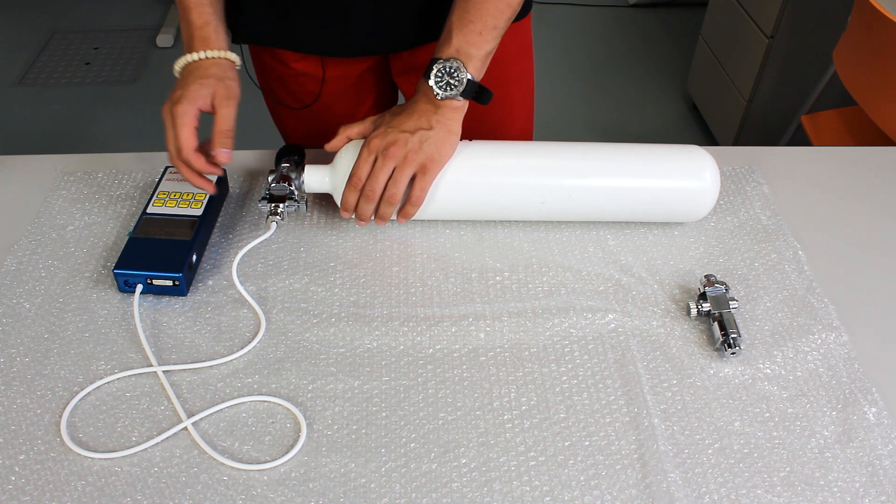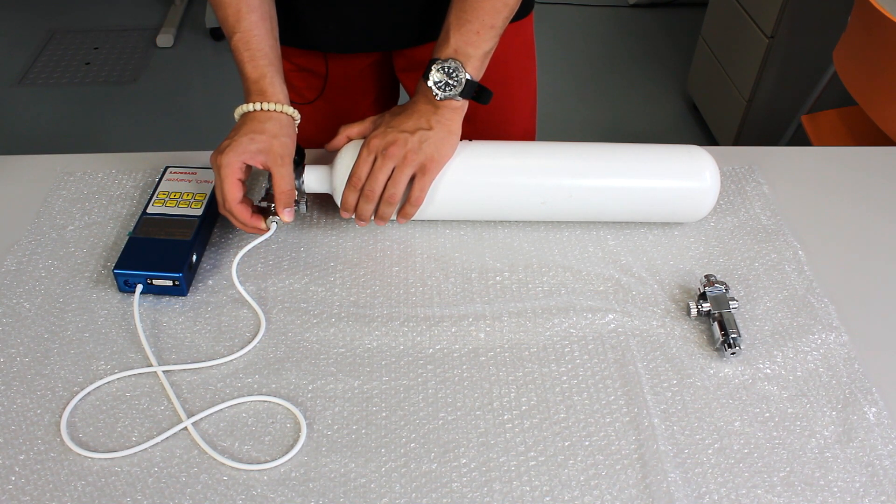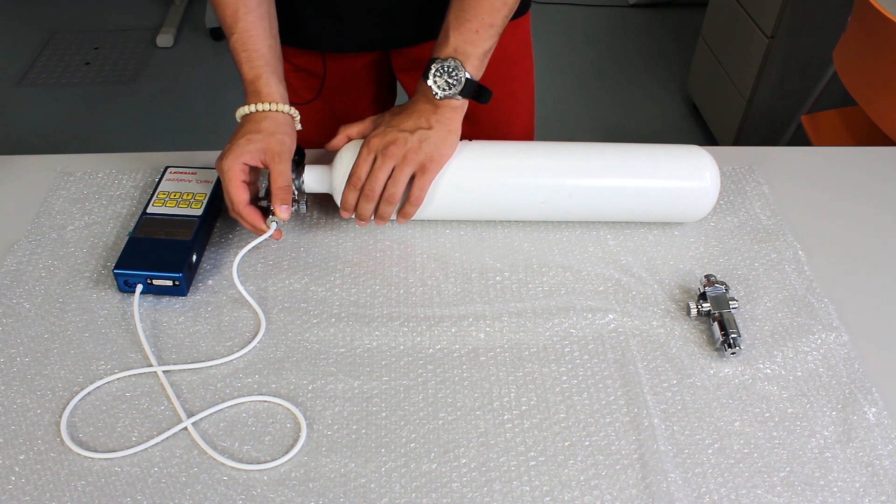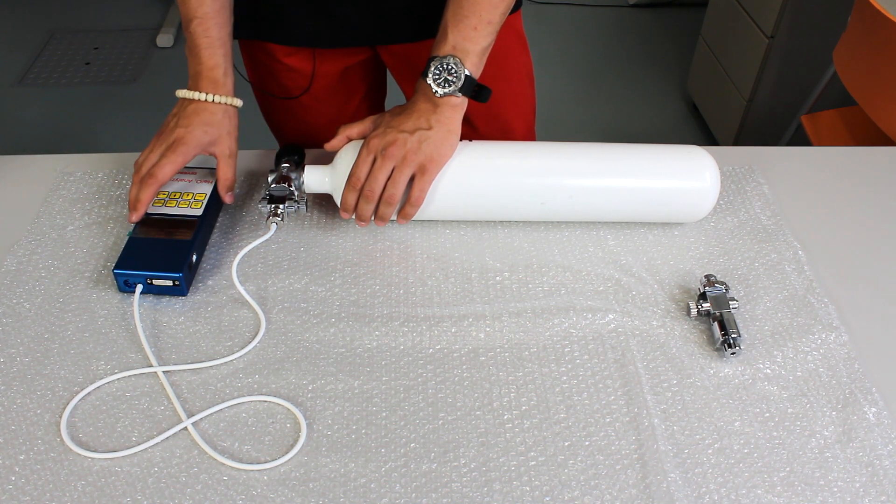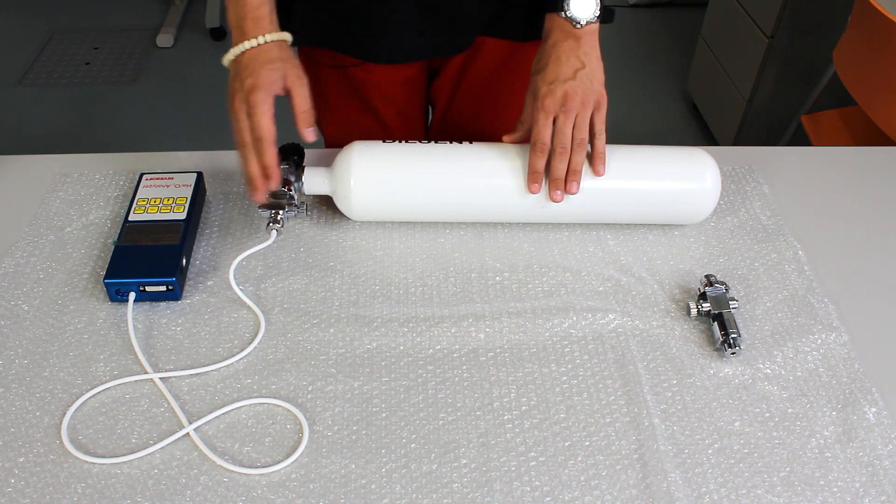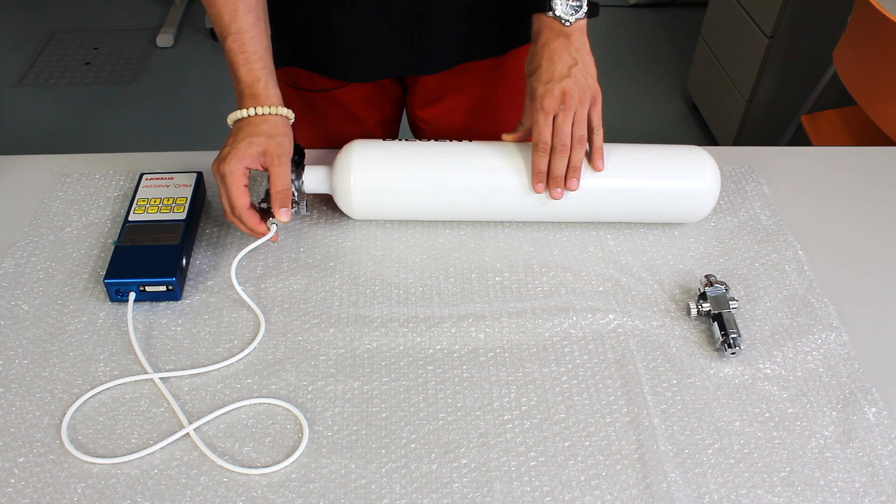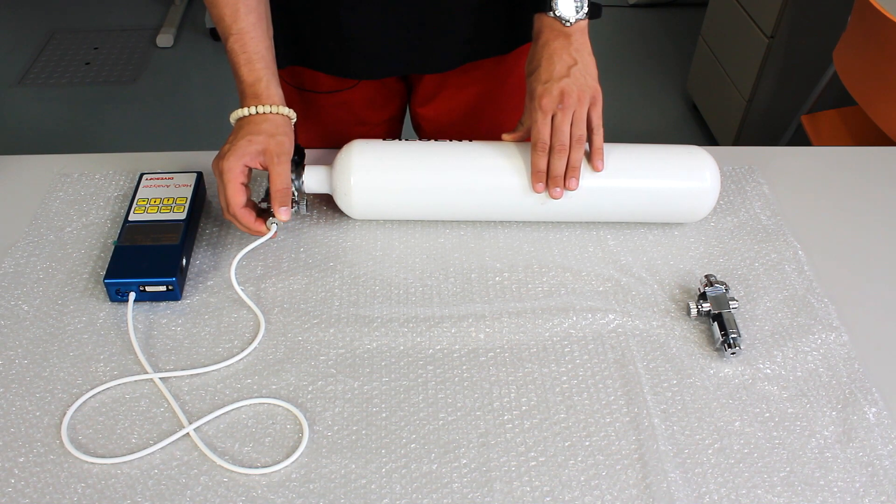When you insert the measuring hose and turn on the analyzer, you have to adjust the speed so the analyzer is still able to measure the amount of helium, but the amount is not so fast that the sensors are overloaded.